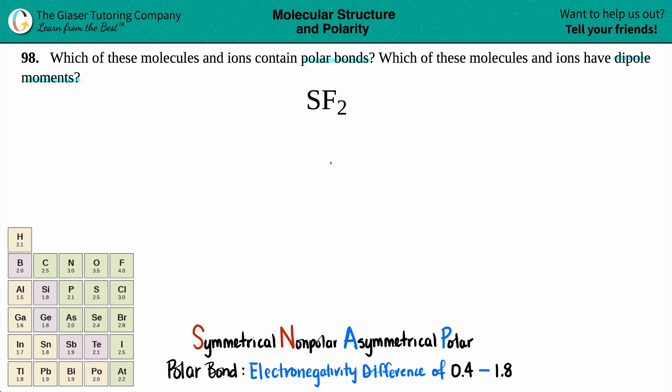So I guess we should answer the first question first. We want to find out if there are polar bonds in SF2. And when we're talking about bonds, we're talking about either single or double or triple bonds that exist between two elements in the molecule. But if I'm looking at SF2, where's the bonds? Do you see them? No, I don't see them.